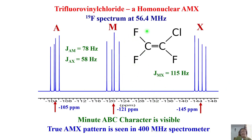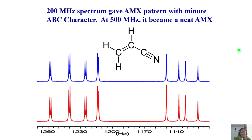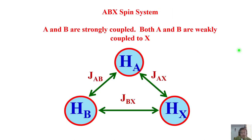At 400 MHz or higher, such spectra will show all lines of perfectly equal intensity, confirming true AMX character. This is the point: AMX will appear closer to pure AMX at higher field. I will stop here for now. In the next class, we will cover another spin system like ABX and then move on to the analysis of proton spectra.